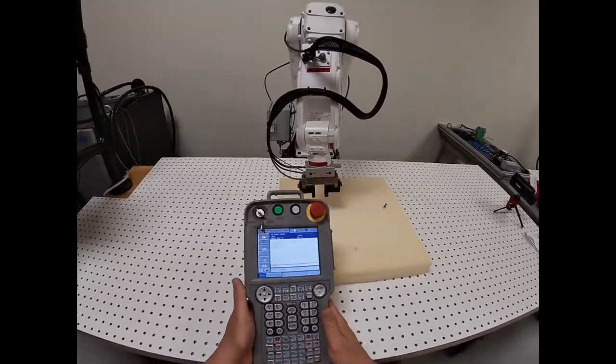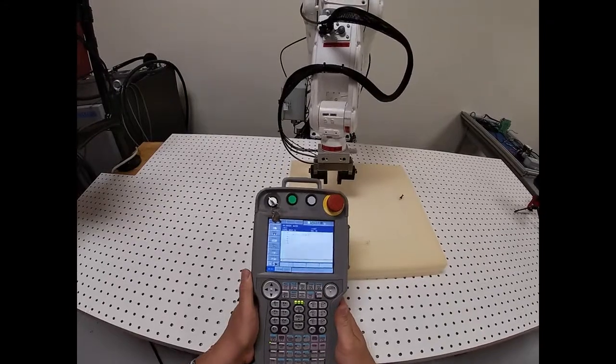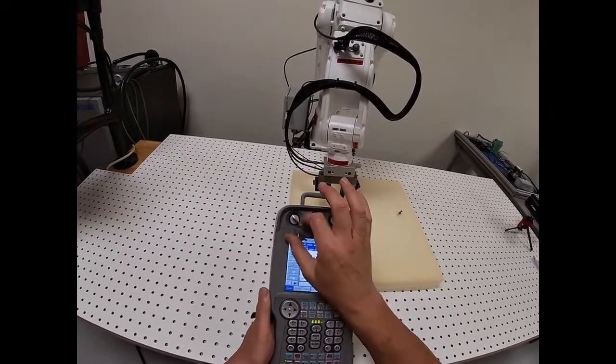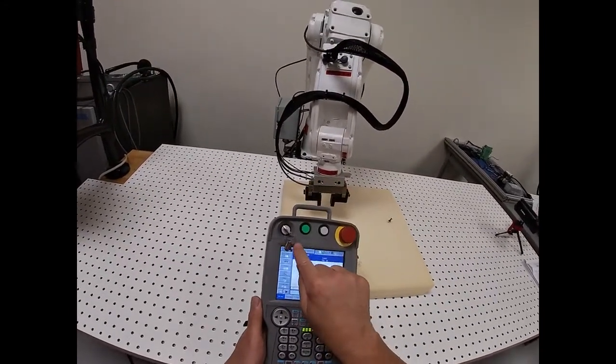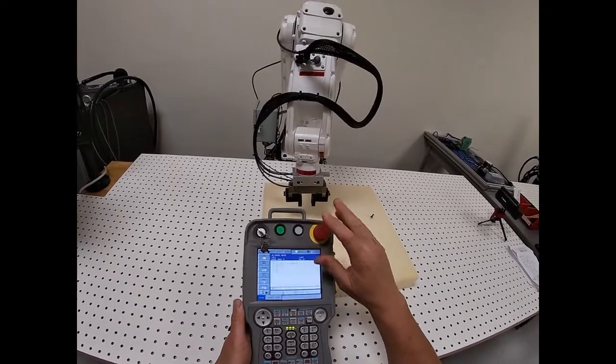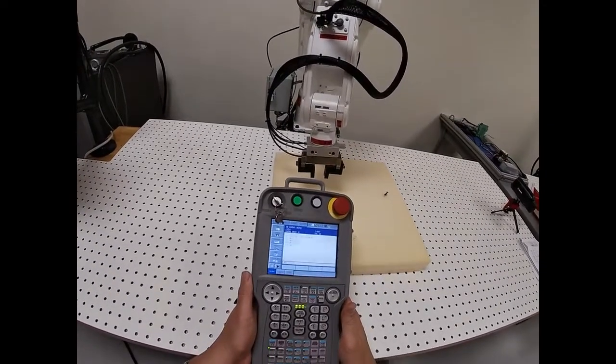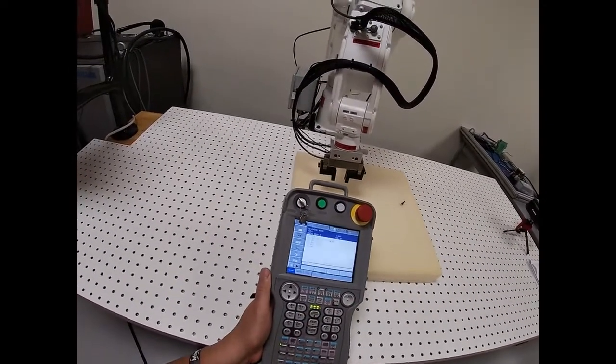After you've moved the robot around and you're feeling comfortable with that, the first thing I'm going to do now is start programming it. Programming has to be in teach mode. You have to have your emergency stop reset and you can't see any error lights on.